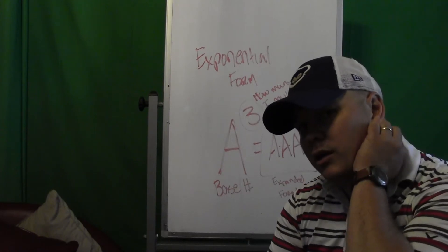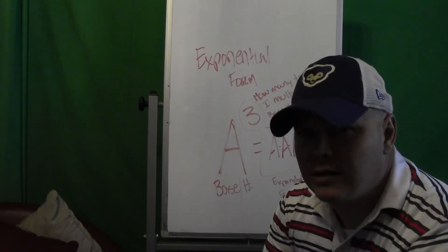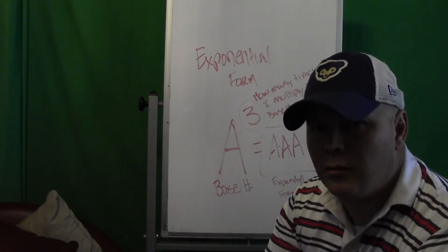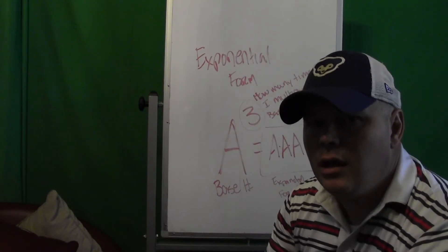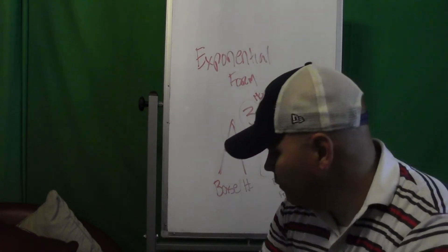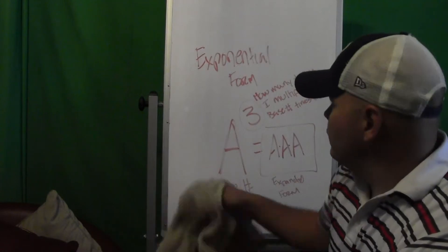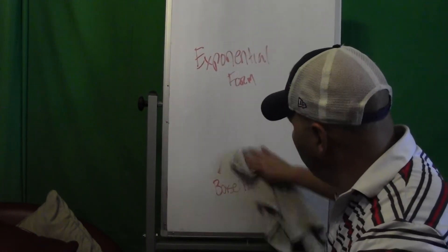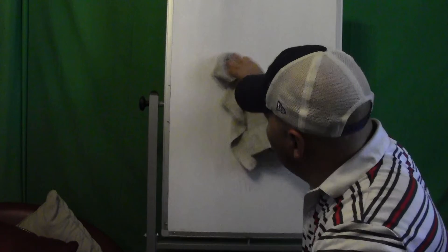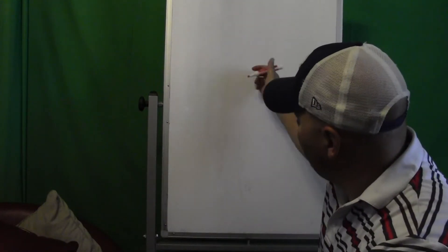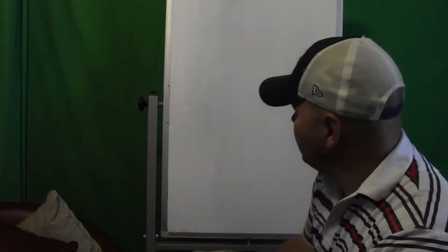All we're really going to be working on this week for the most part is understanding how do we go from exponential notation into expanded form. And for today, since this is our intro lesson, that's all we're going to be doing. So for example, let's say we had a problem that looked like - nice catch - we have 2 to the fourth power.